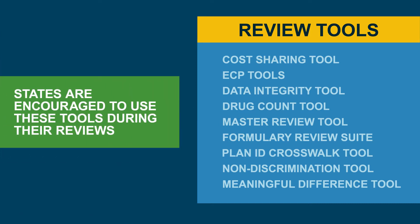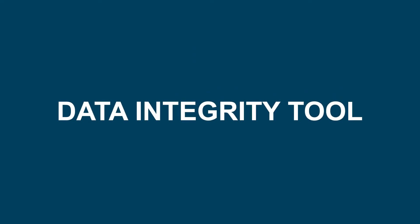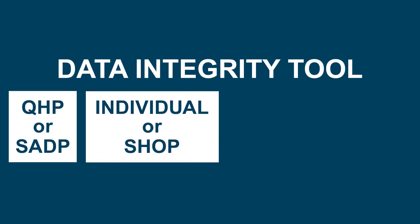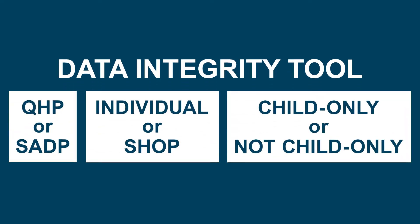States are encouraged to use these tools during their reviews to identify potential errors in their issuers' application data that would require issuers to make corrections. The Data Integrity Tool checks for critical data errors and warns of potential issues within your QHP application. This tool can run validation checks specific to a plan's coverage type, market type, or child-only offering status.